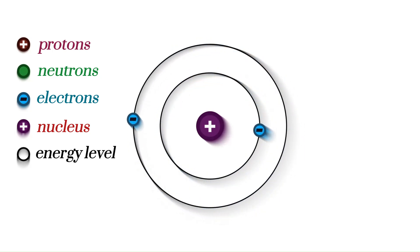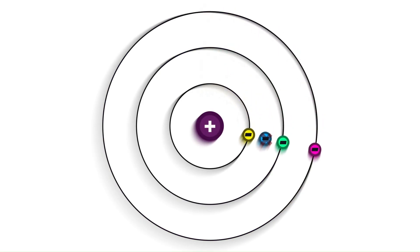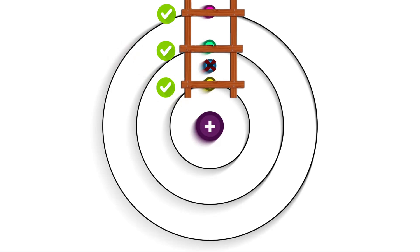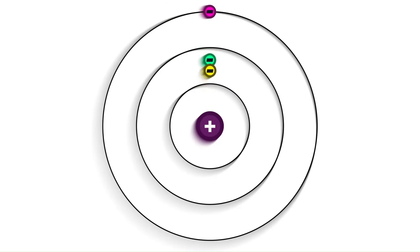But here's the catch: they can't just orbit anywhere because these paths of electrons are quantized. Think of them like rungs on a ladder. The electron has to be on one rung or another, not in between. So why don't electrons move up or down these rungs at will?